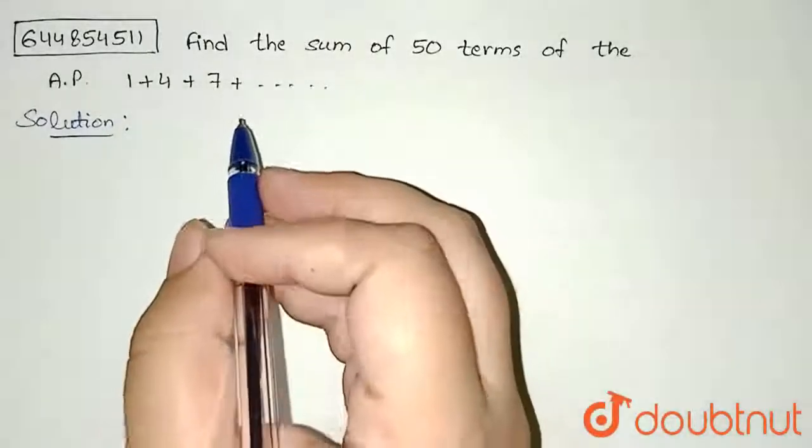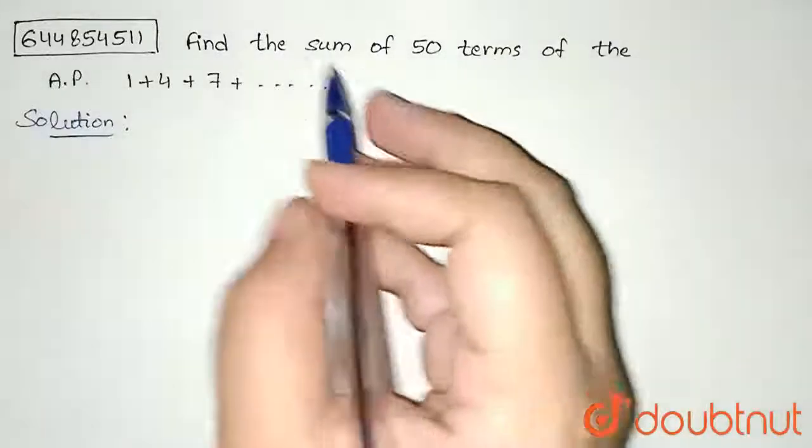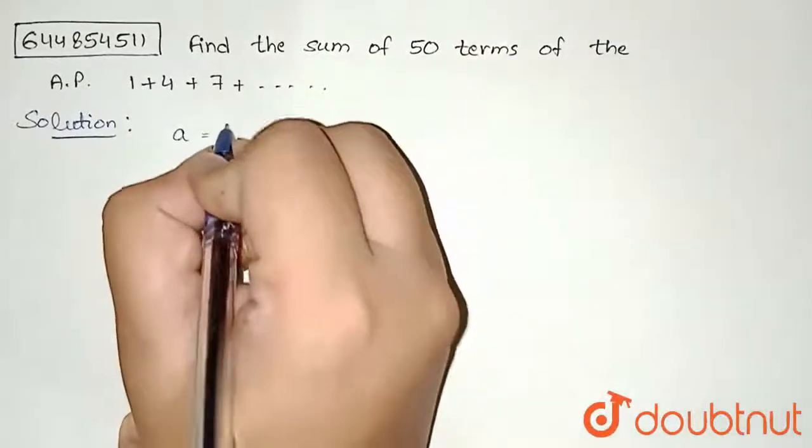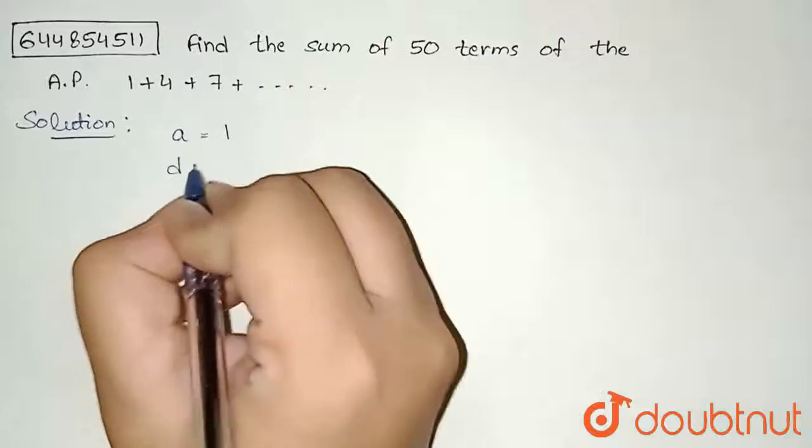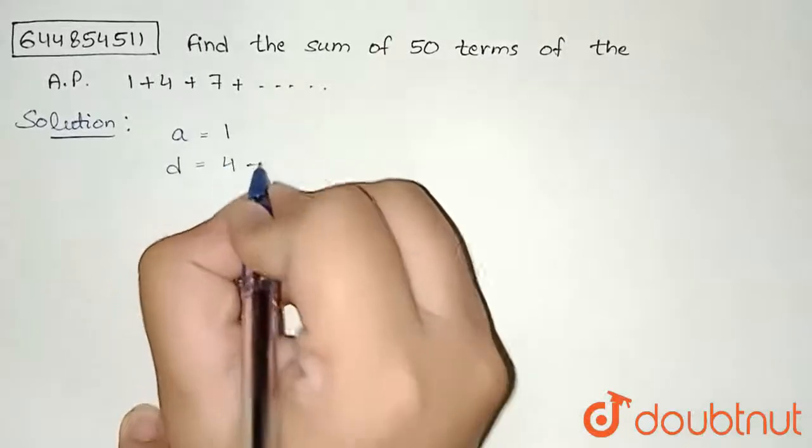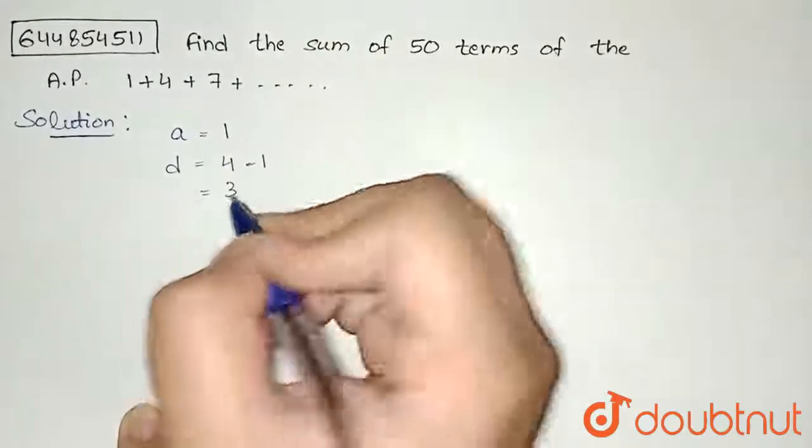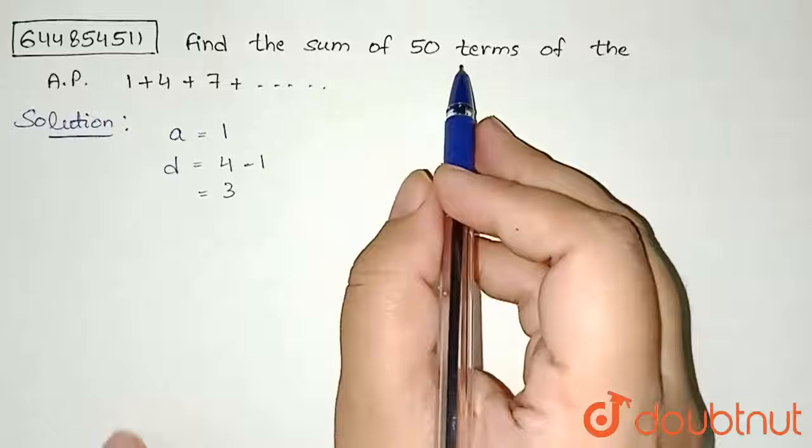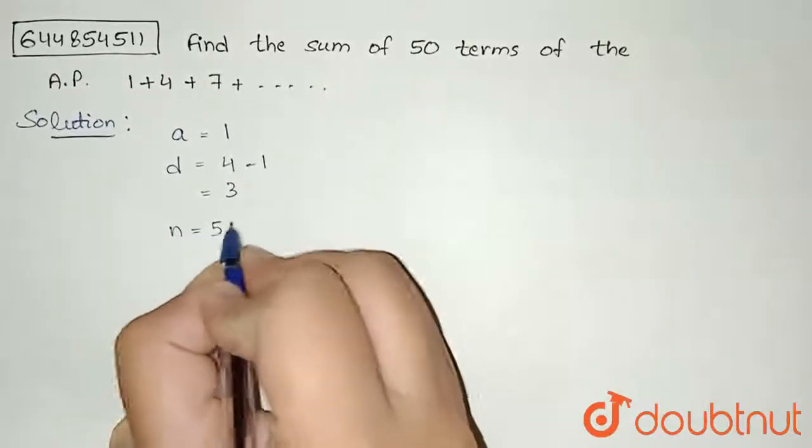I can observe here that we need to find the sum of 50 terms. Let us see what is the first term. A, that is the first term, is 1, and common difference D will be 4 minus 1, that is equal to 3. We are given sum of 50 terms, so my value of N will be 50.